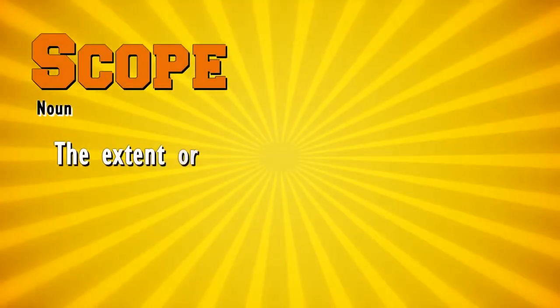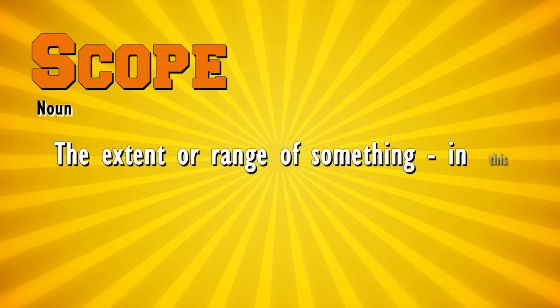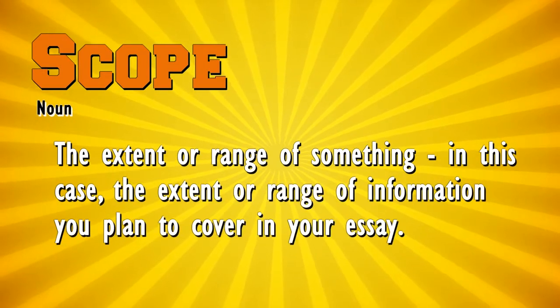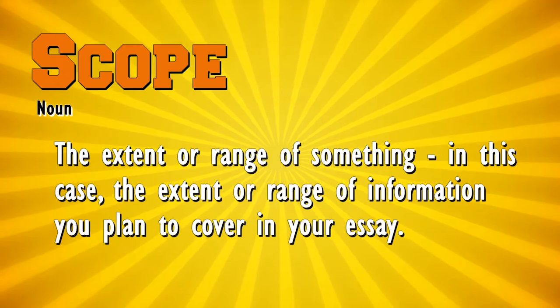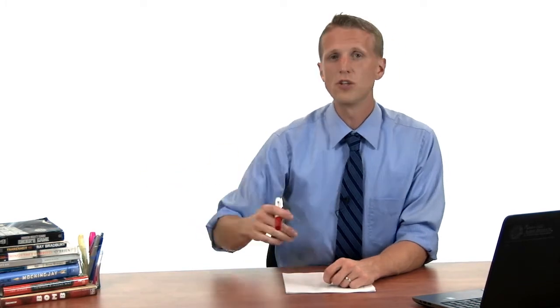Welcome back. Last time we talked about how thesis statements need to make a claim rather than just state a topic. But that's not the only thing a thesis statement needs to accomplish. A good thesis statement also lays out a specific scope for the focus of the essay, and if that scope is either ridiculously vague or overly specific, it will make it much harder for you to write an effective essay. So your thesis statement needs to navigate a fine line between a claim that's too broad and one that's too specific.